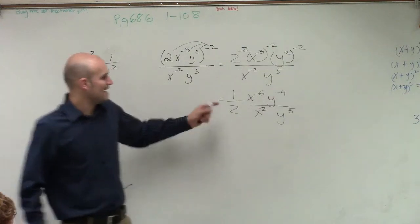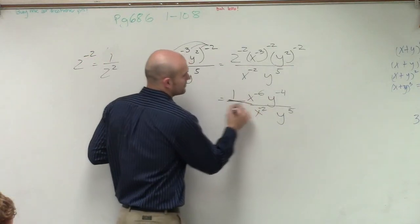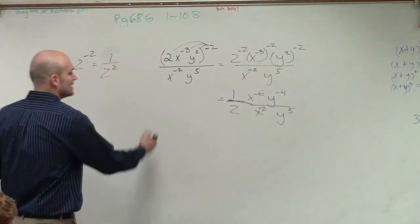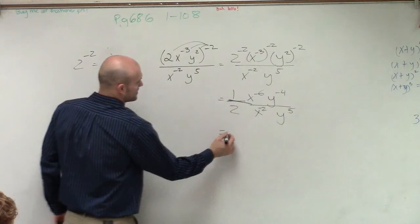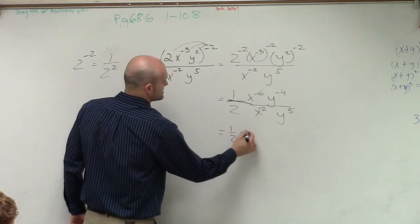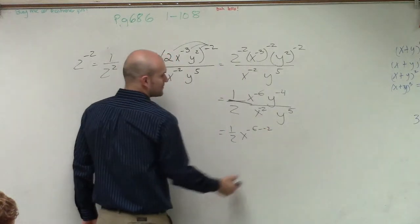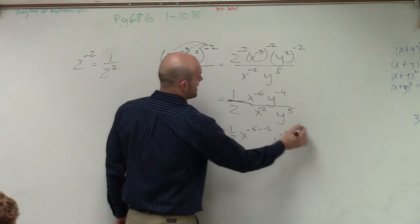So now we have this. And here's your little half. So now what we do, remember when we divide with our exponents, we subtract, right? So therefore, this is now going to become 1 half to the x to the negative 6 minus a negative 2. And this becomes y to the negative fourth minus 5.